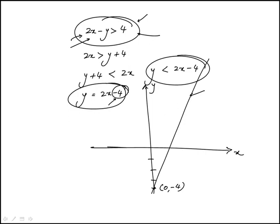Now, this line is going to divide this plane into two regions, one where it would be y is less than 2x minus 4, and the other one would be y is greater than 2x minus 4.